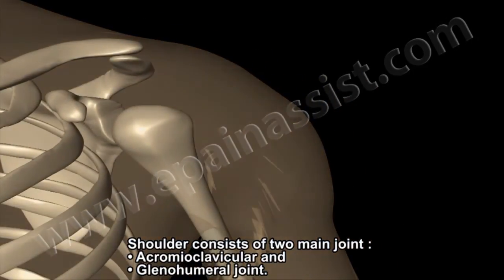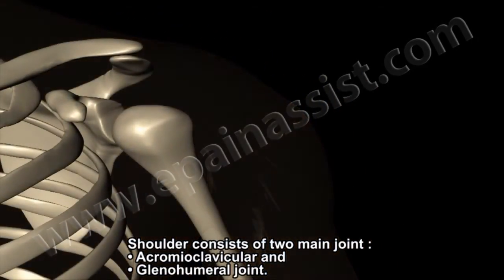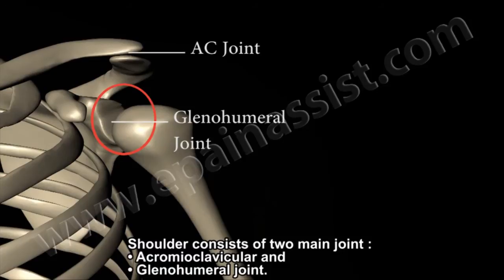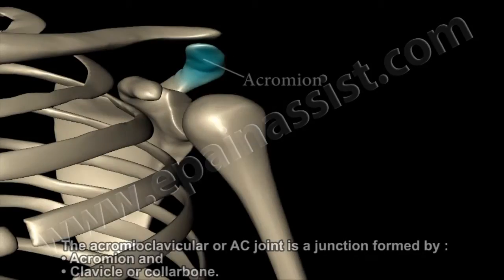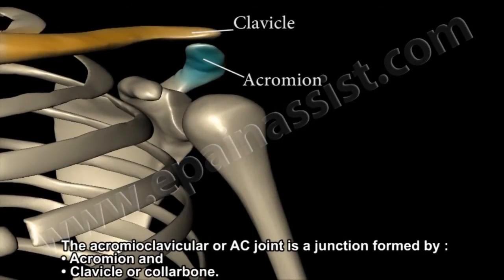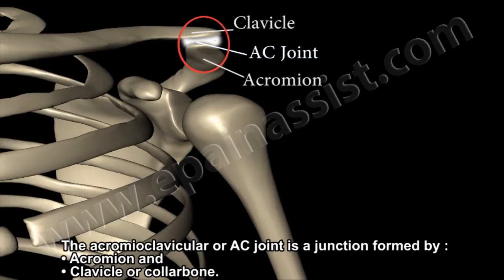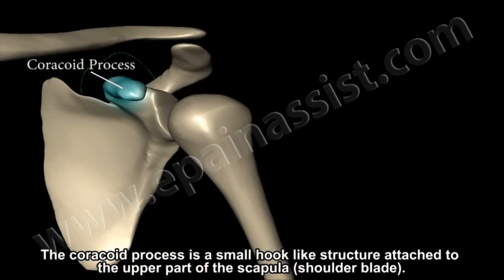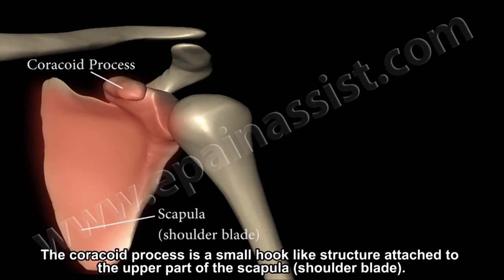The shoulder consists of two main joints: the acromioclavicular and the glenohumeral. The acromioclavicular joint, also known as the AC joint, is formed by the acromion and clavicle, or collarbone. The coracoid process is a small hook-like structure of the upper part of the scapula, also known as the shoulder blade.